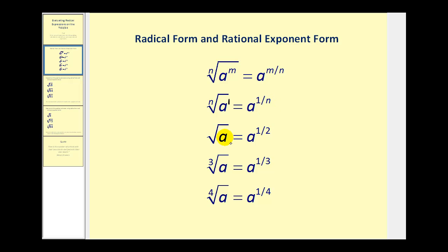If we have the square root of a, the index would be two, and the exponent on the a would be one, so that would be equal to a to the one-half power. The cube root of a would be a to the one-third power. The fourth root of a would be a to the one-fourth power, and so on.